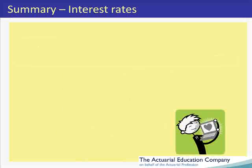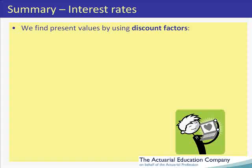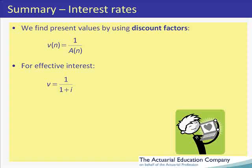In summary, we find present values using discount factors, which are simply the inverse of the accumulation factors we met in a previous unit. For effective interest, we define v to be the present value of a cash flow due in one year's time, so v equals 1 over (1 plus i). To obtain the present value of a cash flow due in n years time, we use v^n, or (1 plus i) to the minus n, as our discount factor.